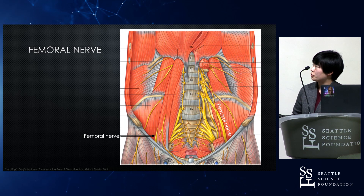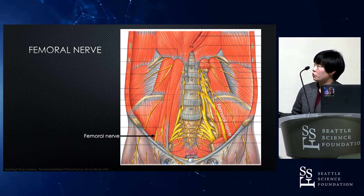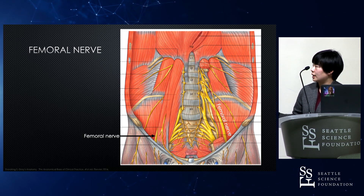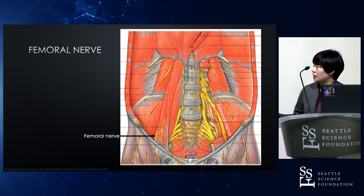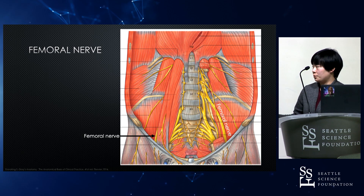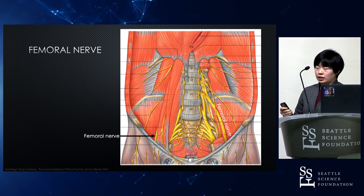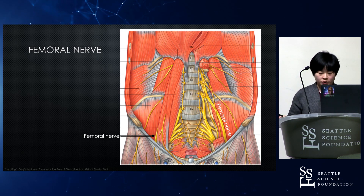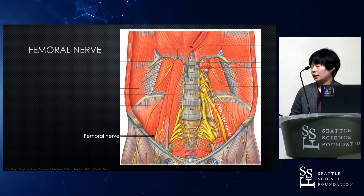The femoral nerve usually consists of L2 to L5 contributions. It forms a common trunk and goes in between the iliacus muscle and psoas major. Then it goes through under the inguinal ligament and innervates the medial anterior and medial thigh and medial leg.